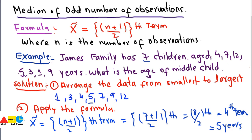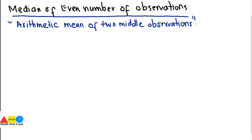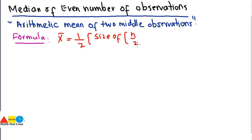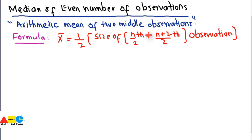For even number of observations, a different formula is used. The median is the arithmetic mean of the 2 middle observations. The formula is: x̃ = (1/2) × [value of (n/2)th observation + value of (n/2 + 1)th observation]. Let's use an example — it's much easier than it looks.